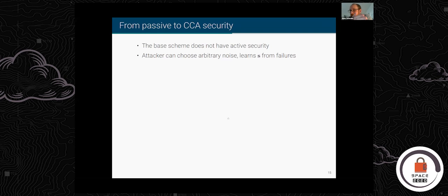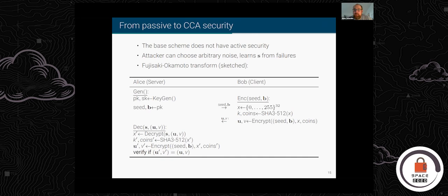Bob, by choosing ciphertexts appropriately, can obtain information about Alice's long-term secret. That means we don't have active security — we can learn the secret from failures or non-failures for specially crafted ciphertexts. There is a way to address this, and it's what most NIST candidates do: the Fujisaki-Okamoto transform. I'm only sketching the idea — it looks a bit scary but the core idea is not terribly hard.